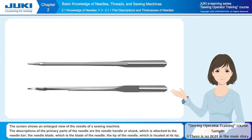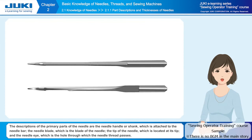Chapter two covers part descriptions and thicknesses of needles. The screen shows an enlarged view of the needle of a sewing machine. The descriptions of the primary parts of the needle are: the needle handle or shank, which is attached to the needle bar; the needle blade, which is the blade of the needle; the tip of the needle, which is located at its tip; and the needle eye, which is the